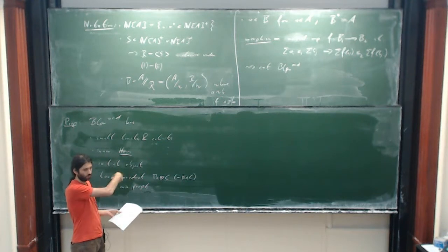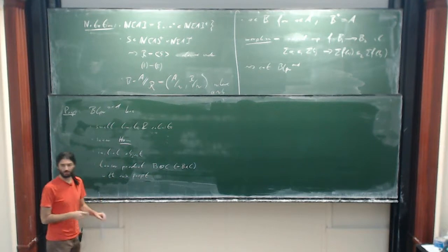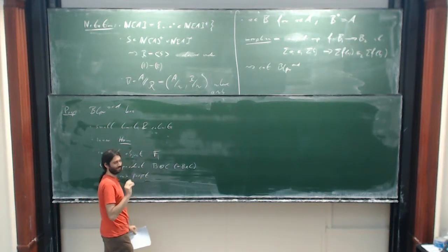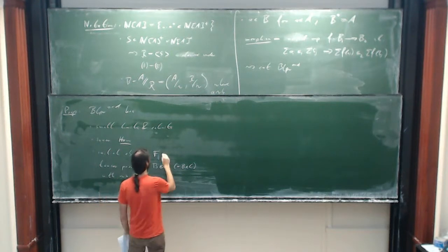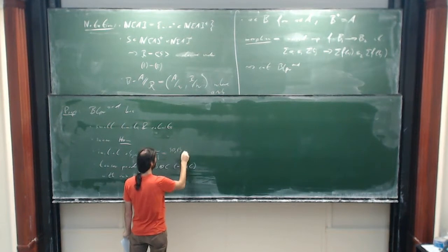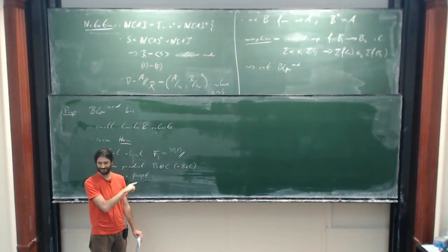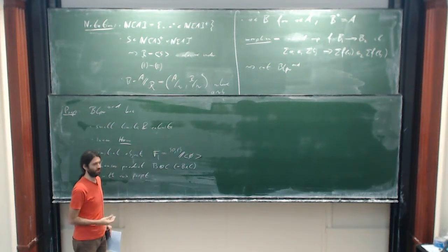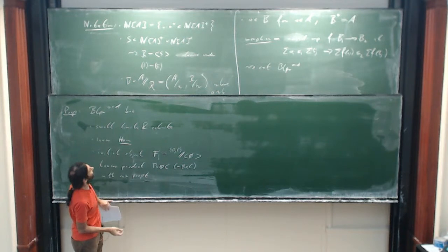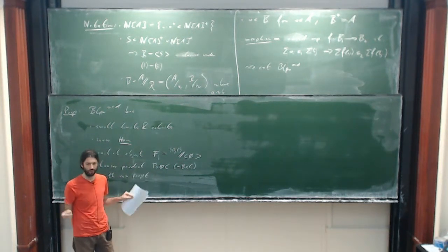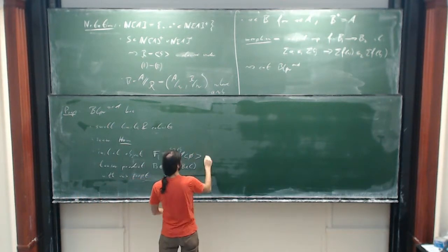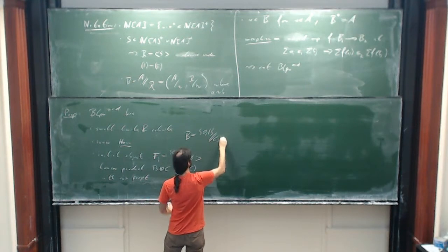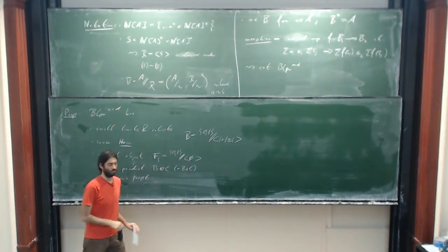This category of ordered blueprints is a nice category which behaves very much like the category of rings in many respects. It has all small limits and colimits, an internal hom, an initial object, and also a terminal object. What's an initial object? I'll leave it open for a moment. And it has a tensor product.